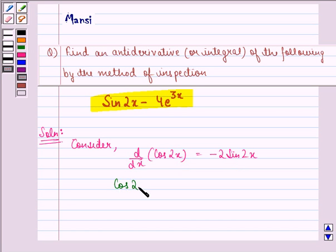So we can say that cos 2x, or we can say sin 2x, will be equal to d by dx of minus 1 by 2 cos 2x.